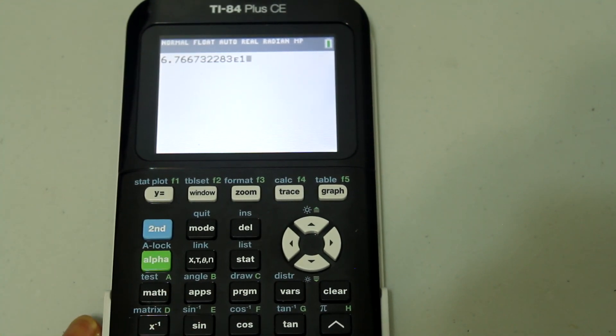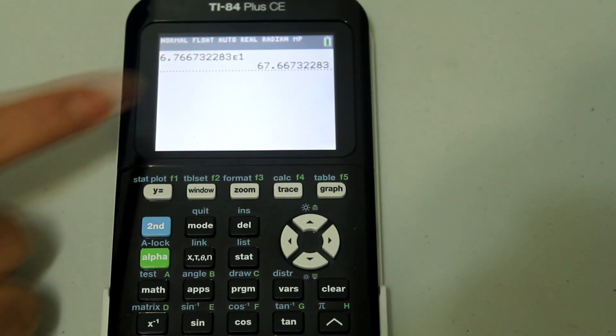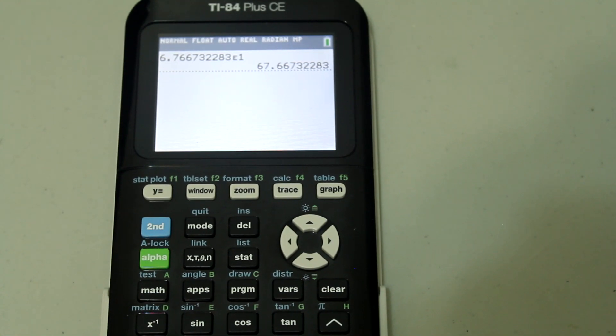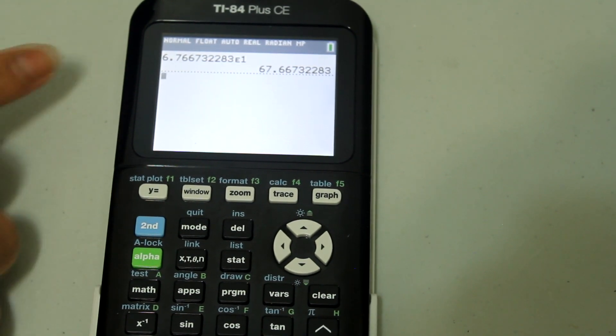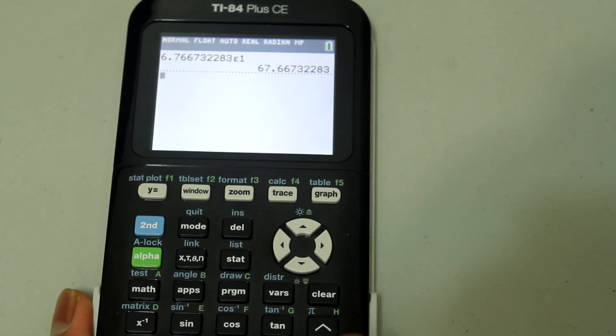And to get it out of scientific notation, just press enter and you get it in the regular notation. Answers in the unit converter are by default in scientific notation. So once you get it on the home screen, you can easily convert to regular numbers.